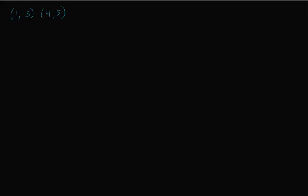We can even do this if they just give us two points — we can figure out an equation from just those two points. The formula is still y minus y₁ equals m(x minus x₁). The first thing you have to do is find the slope. Remember: slope equals (y₂ minus y₁) over (x₂ minus x₁). So we take (negative three minus five) over (one minus four), keeping the same order for both.